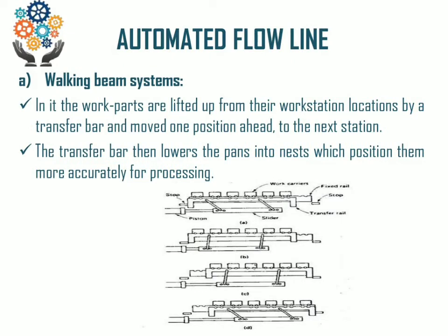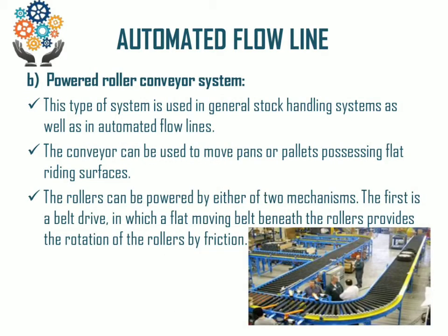The powered roller conveyor mechanism evolved as a type of system used for both stock handling and automated flow lines. The conveyor can be used to move pans or pallets on flat process surfaces. The rollers can be powered by either a belt drive, in which a flat moving belt beneath the rollers provides rotation by friction, or by power devices such as electric motors.